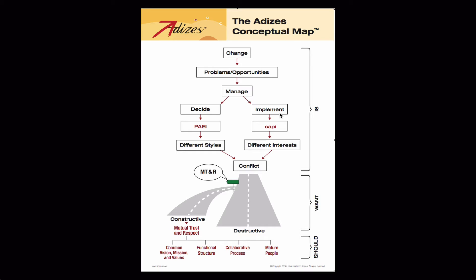Do you see the conflict between the two systems we need in order to manage? We need both an open system, a democratic system, and a closed dictatorial system. The conflict between these two systems is known as demokraship. That's the word we use for this conflict.